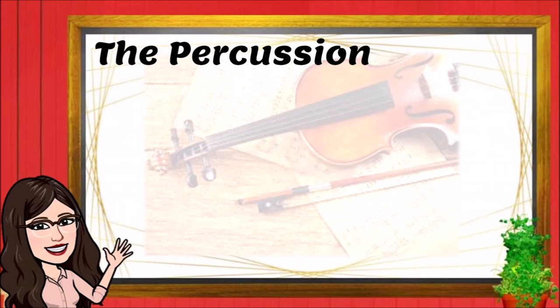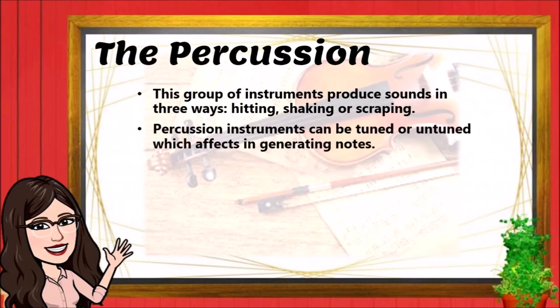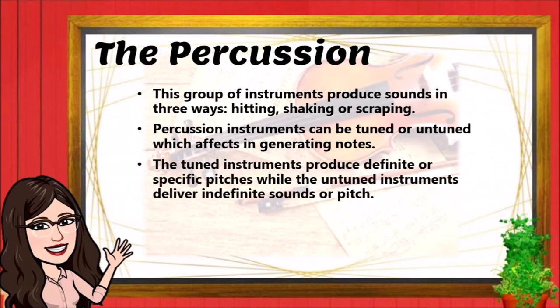Next, let us discuss percussion instruments. This group of instruments produces sounds in three ways: hitting, shaking, or scraping. Percussion instruments can be tuned or untuned, which affects how they generate notes. The tuned instruments produce definite or specific pitches, while the untuned instruments deliver indefinite sounds or pitch.